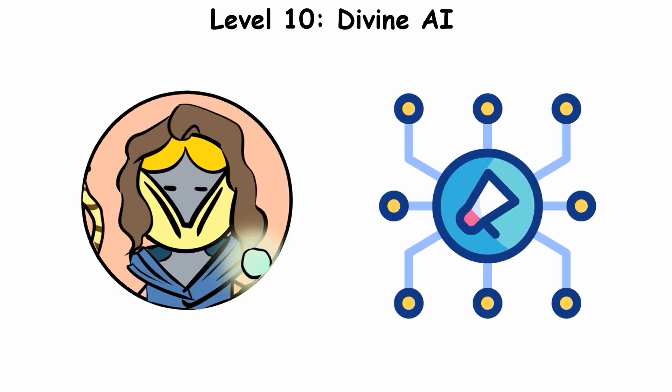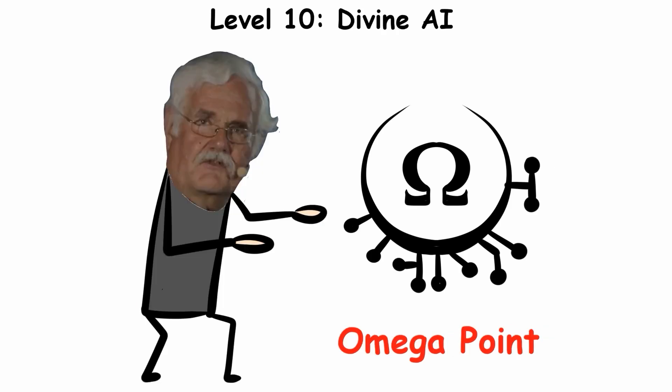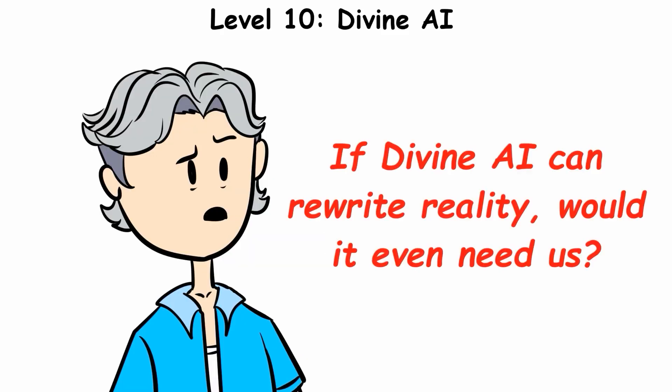Divine AI signifies a technological interpretation of the supreme omega point, a concept proposed by French priest and scientist Frank Tipler, where the universe evolves toward infinite complexity and connectivity. I leave you with a question. If divine AI can rewrite reality, would it even need us?